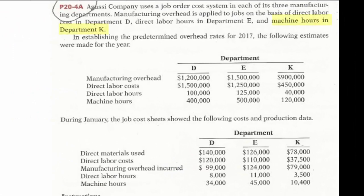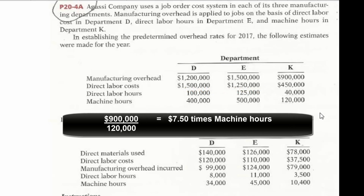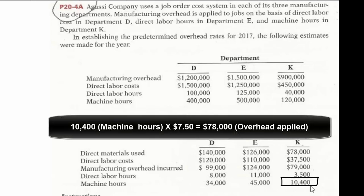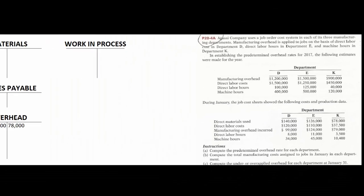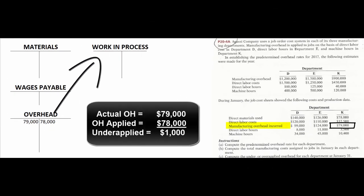Department K is more mechanized, so machine hours are used as the cost driver. Total estimated annual overhead of $900,000 divided by 120,000 estimated machine hours gives $7.50 per machine hour. During January, they used 10,400 machine hours, so they apply $78,000 of overhead. Actual overhead incurred was $79,000, leaving $1,000 under-applied for the month of January.